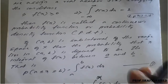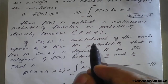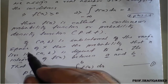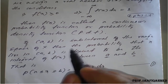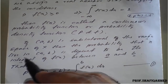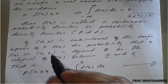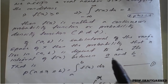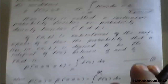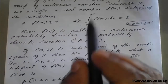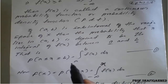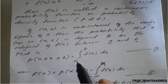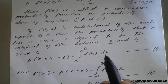If (a, b) is a sub-interval of the range space of X, then the probability that X lies in (a, b) is defined to be the integral of f(x) between a and b. The limits from minus infinity to plus infinity can be replaced because the range is given from a to b. So it becomes the integration from a to b of f(x) dx.